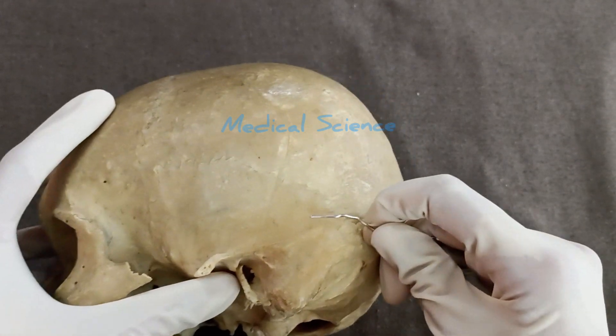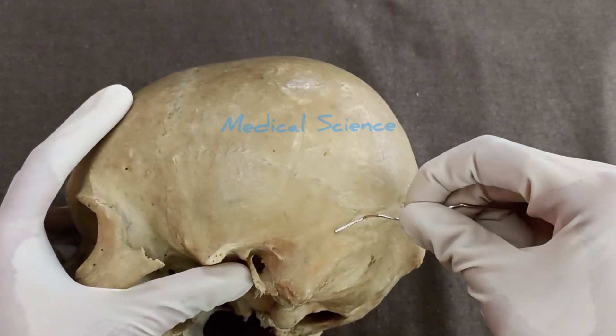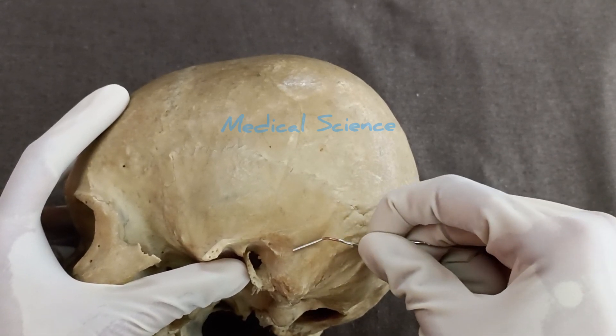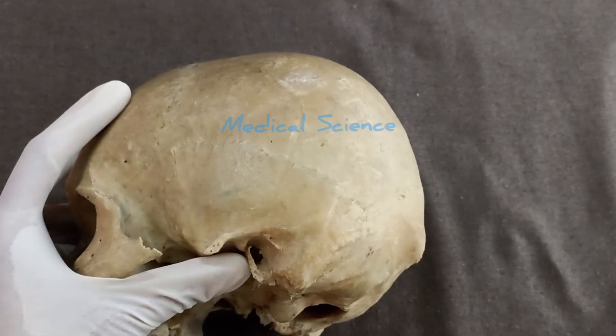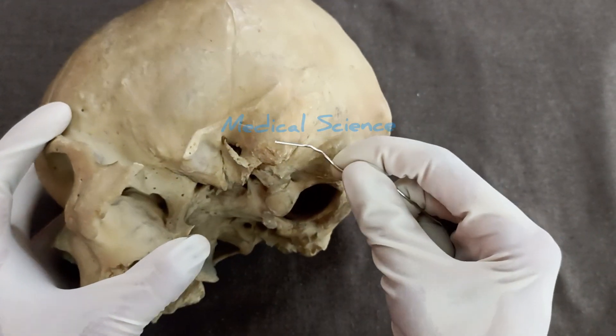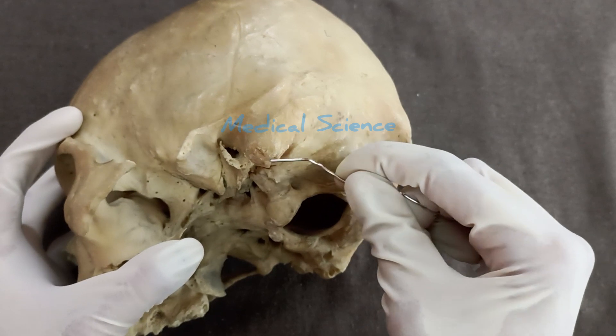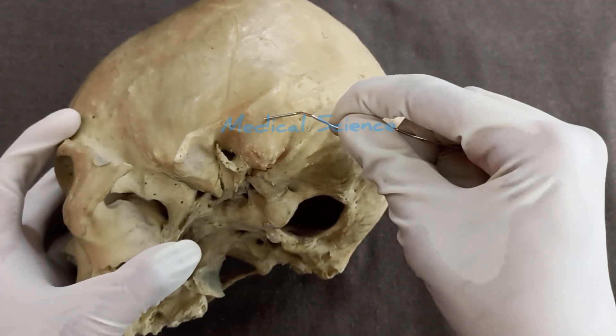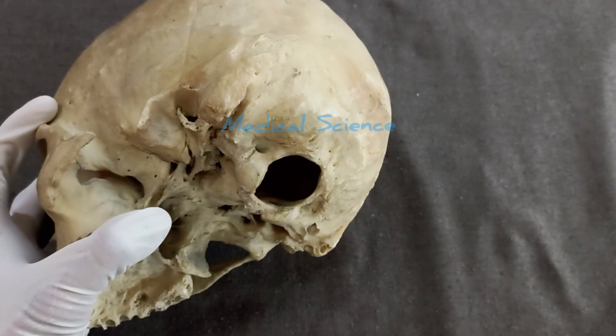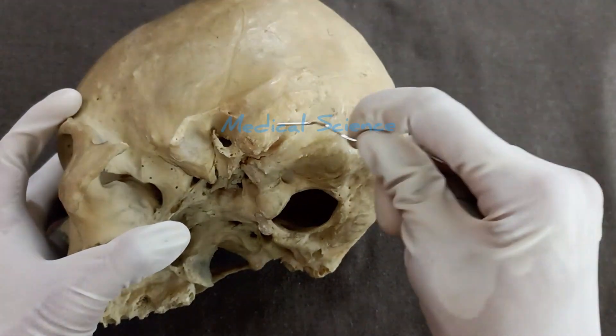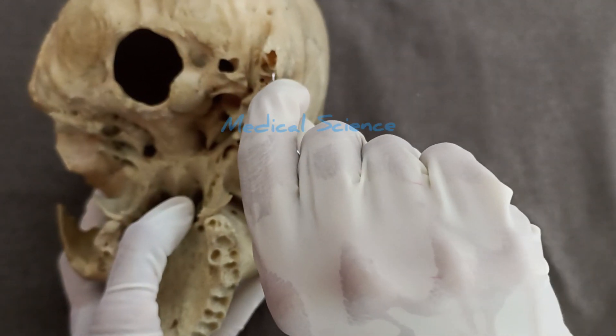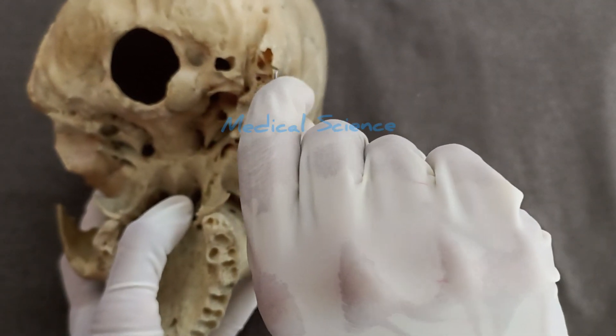The mastoid part above is continuous with the squamous part of the temporal bone. This squamous part of temporal bone actually extends one centimeter below the supramastoid crest. In case of adults, this mastoid part contains numerous intercommunicating air cells which communicate with the tympanic cavity through the mastoid antrum.